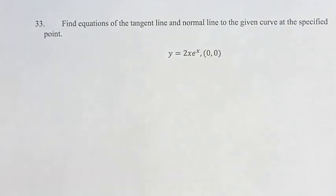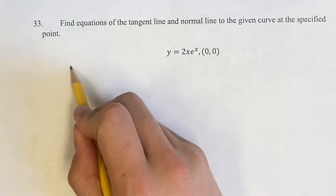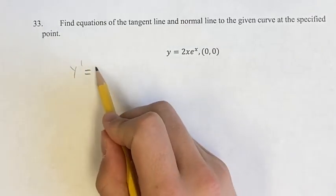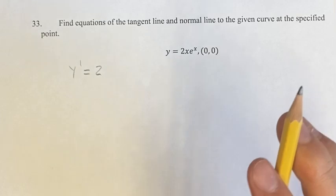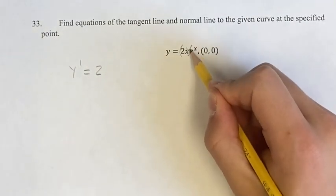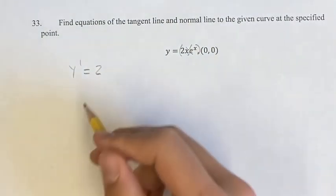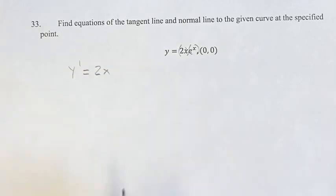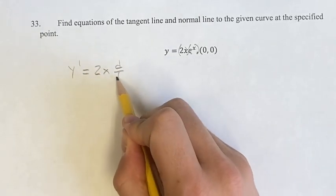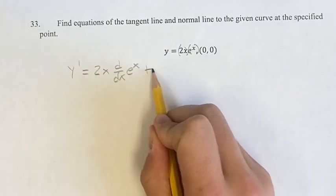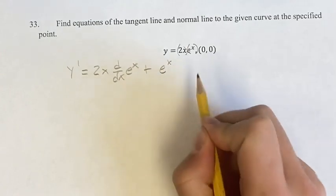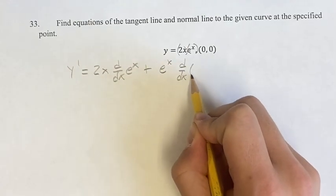So firstly, we're going to want to find the slope of the tangent line, which we're going to do using the derivative. So we have 2, and then we're going to take the product rule. So we're going to have 2x times the derivative of e to the x plus e to the x times the derivative of 2x.